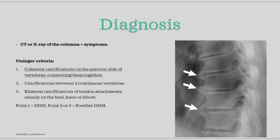Number 1 says that there are coherent calcifications on the anterior side of the vertebrae, which form bridges that connect them together. This should occur between most of the vertebrae. Number 2 says that there are visible calcifications between two continuous vertebrae. And number 3, calcifications in the tendon attachments. This has to be present in the same tendon on both sides of the body. The Achilles tendon is the most commonly affected one.